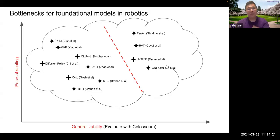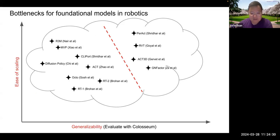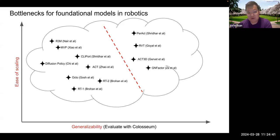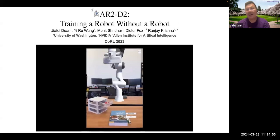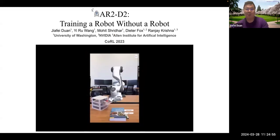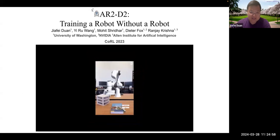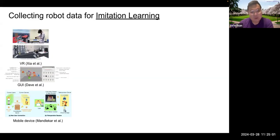Moving to the next axis of our work: now that we can decide which model is best for generalization in robotic manipulation, the next bottleneck is data. Getting enough data isn't just about 100K or 200K trajectories — can we allow humans to actually contribute to the data collection process? That leads to our second work, AR2D2: training a robot without a robot. This work was accepted to CoRL last year.